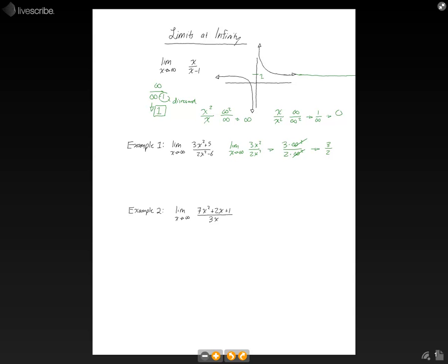Now, let's take a look at example number two. We're taking the limit as x approaches infinity of 7x squared plus 2x plus 1 over 3x. You'll notice that our largest power of x on top is 7x squared. The largest power of x on the bottom is 3x. So let's pull those over, and we'll put 7x squared over 3x, which when we plug in infinity will get to 7 times infinity squared over 3 times infinity.